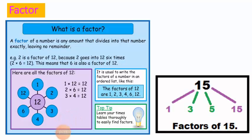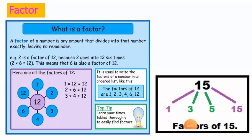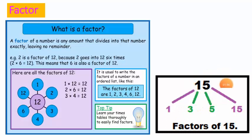Now let's take another number, fifteen. The factors of fifteen are one, three, five, and fifteen. When we multiply one with fifteen we get fifteen; three multiplied with five gives fifteen; five multiplied with three gives fifteen; and fifteen multiplied with one also gives fifteen. So the factors of fifteen are one, three, five, and fifteen. Keep note that repeated numbers are considered only once.